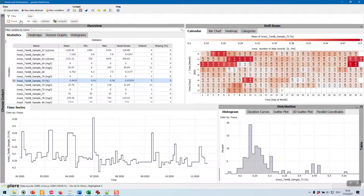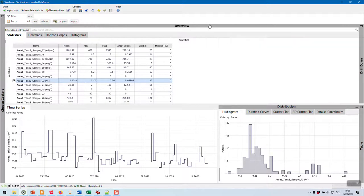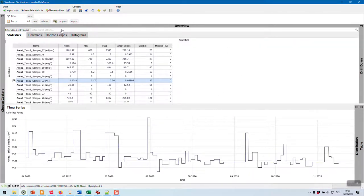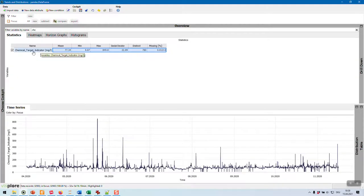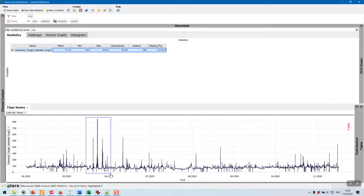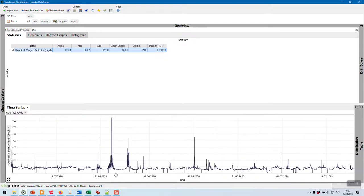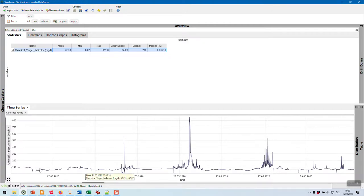But let's get to the use case. The use case is about anomaly detection. We have here a chemical target indicator that shows anomalies from time to time. Here, for example, we see an anomaly, here's an anomaly again, and here's a third one.